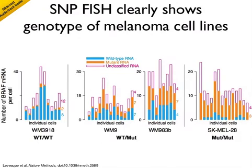We validated the assay using a set of human melanoma cell lines with the BRAF V600E mutation. Each bar represents a single cell, and the bar height is total BRAF RNA in that cell. The coloring indicates how many RNA were labeled as wild type, mutant, or unclassified. This data shows how the SNPFISH assay tells its genotype on a single cell basis. The small amount of mislabeling in the homozygous wild type and mutant lines is the consistent behavior of the assay and is accounted for in significance measures.